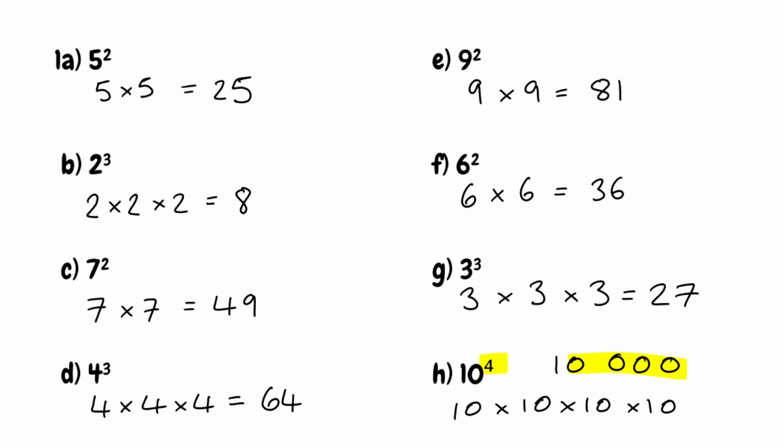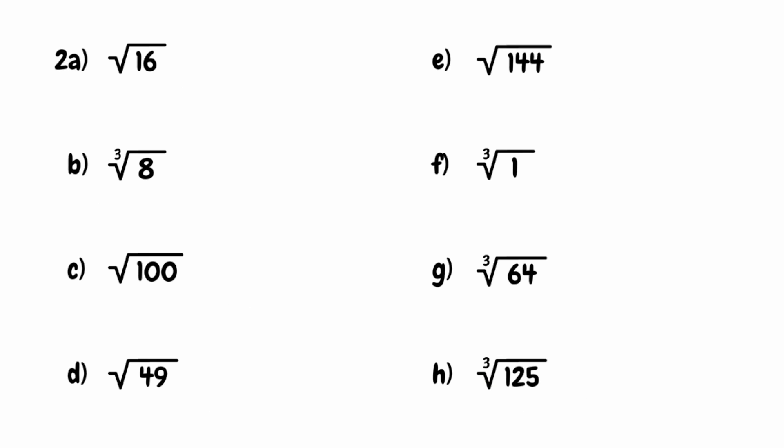We've looked at examples of calculating powers. We're now going to take a look at some examples where we calculate roots. A root is the inverse of a power — it's another number that is multiplied by itself a specific number of times to give us the original number. This is the root symbol, sometimes referred to as the radical. If there's no number attached to the radical, we're looking for the square root. Any other roots will have a number attached, called the index.